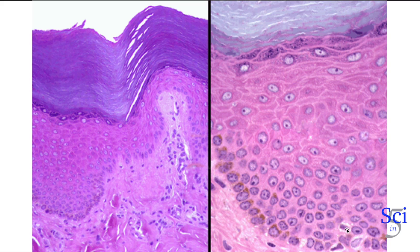Lastly, we have Merkel cells. These are specialized skin cells with nerve endings that are specialized to sense pain.